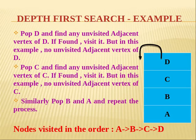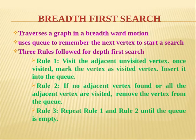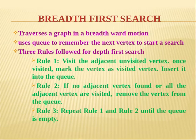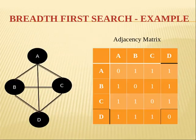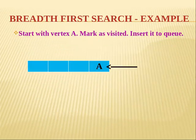Now we see breadth-first search. It traverses a graph in breadthward motion and uses a queue to remember the next vertices to search. There are three rules: Rule 1 — visit the adjacent unvisited vertex, mark it as visited, and insert it into the queue at the rear end. Rule 2 — if no adjacent unvisited vertices are found, remove the vertex from the front of the queue. Rule 3 — repeat until the queue is empty.